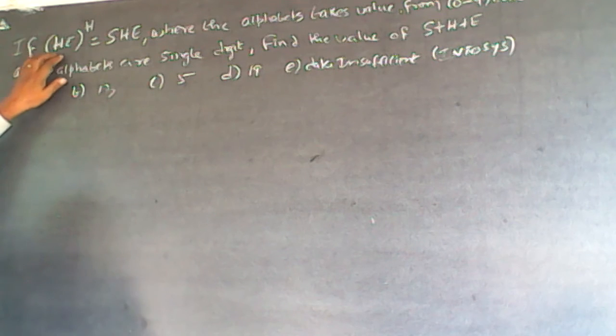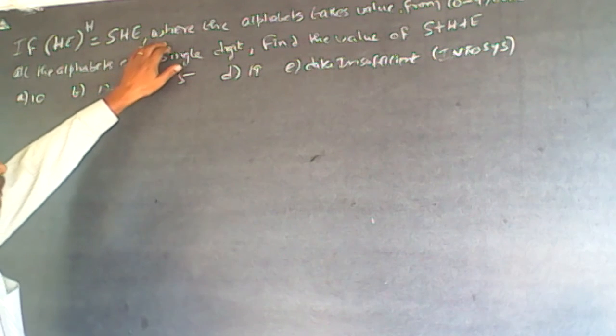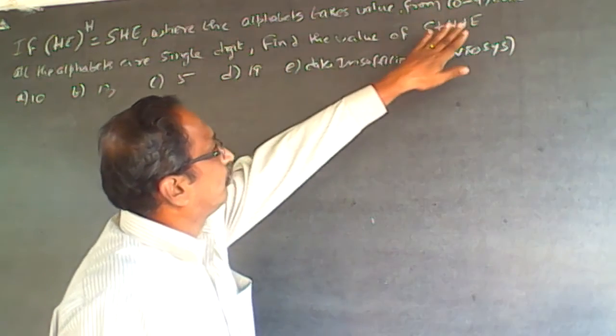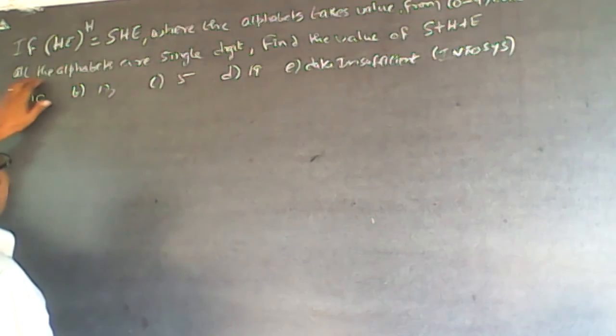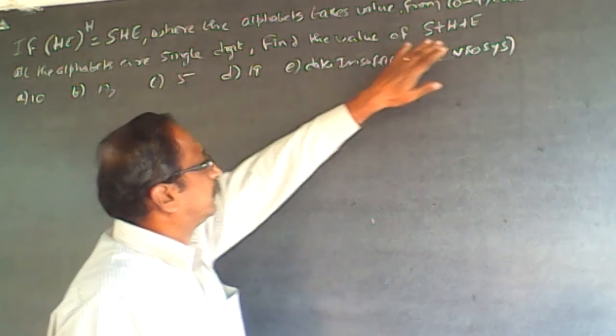The question is if C power H is equal to SHC, where the alphabet takes value from 0 to 9 and all the alphabets are single digits, find the value of S plus H plus C.